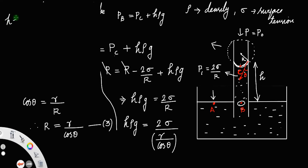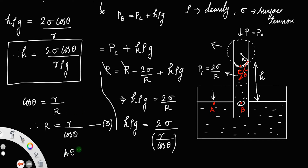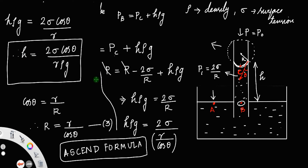Therefore h is equal to 2 sigma cos theta divided by r rho g. This is the expression for the ascent, or the height through which the liquid rises in a capillary tube. This is called the ascent formula. Clearly, the height depends upon the radius of the tube — the narrower the tube, the greater will be the height raised. Also, if the density of the liquid is less, the height will be higher. With an increase in surface tension, the height also increases.